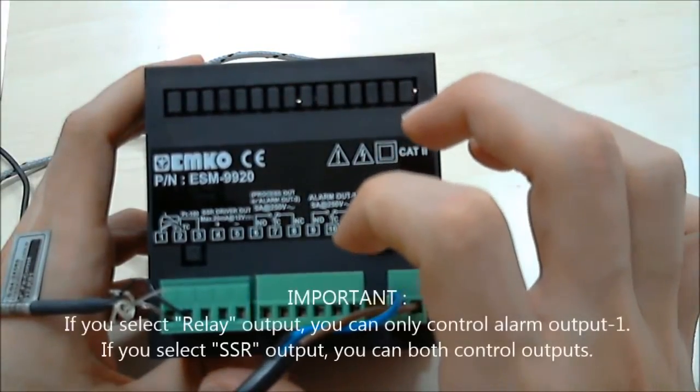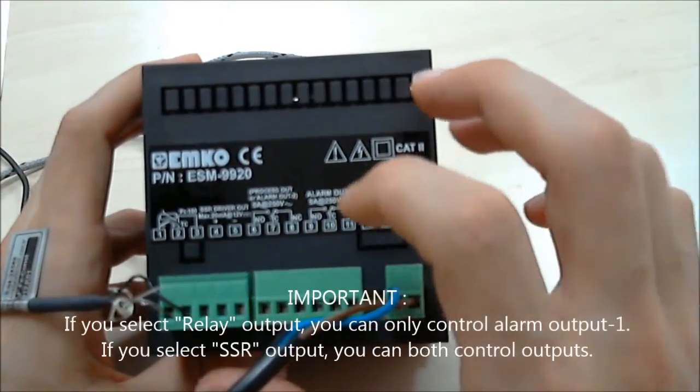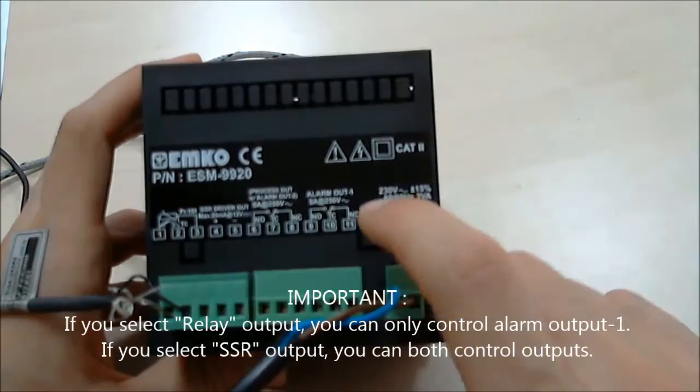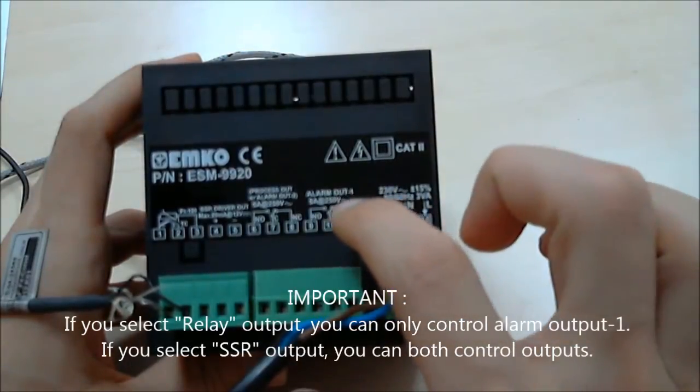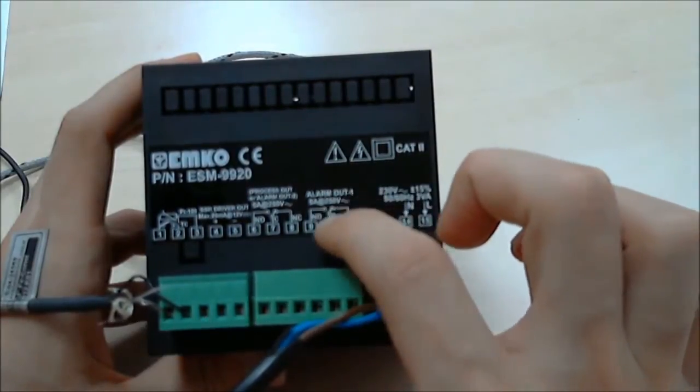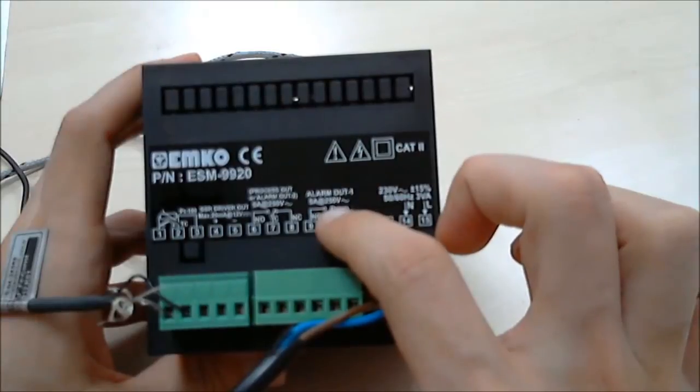But the important thing is here: if you select relay output control by parameters, only alarm output 1 will be active. So you can use this output for high alarm process.